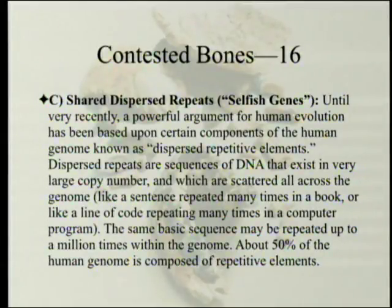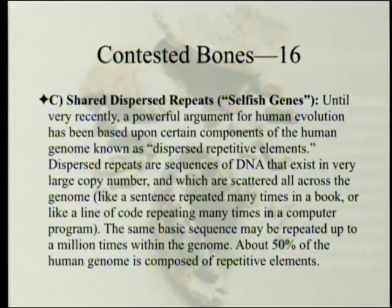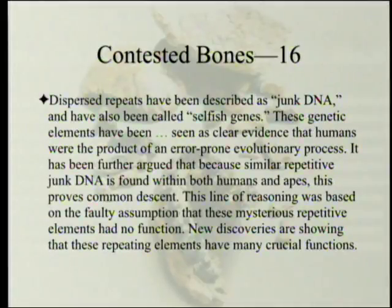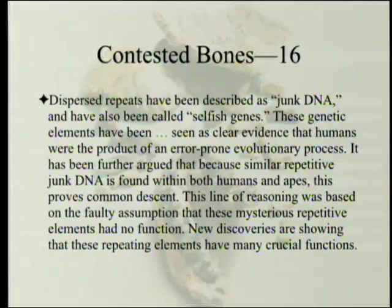C: Shared dispersed repeats, sometimes known as selfish genes. Until very recently, a powerful argument for human evolution has been based on certain components of the human genome known as dispersed repetitive elements. Dispersed repeats are sequences of DNA that exist in very large copy number scattered all across the genome—like a sentence repeated many times in a book or a line of code repeated many times in a computer program. The same basic sentence may be repeated up to a million times within the genome. About 50% of the human genome is composed of repetitive elements. Dispersed repeats have been described as junk DNA and also called selfish genes, seen as clear evidence that humans were the product of an error-prone evolutionary process. It has further been argued that because similar repetitive junk DNA is found within both humans and apes, this proves common descent. This line of reasoning was based on the faulty assumption that these mysterious repetitive elements had no function.